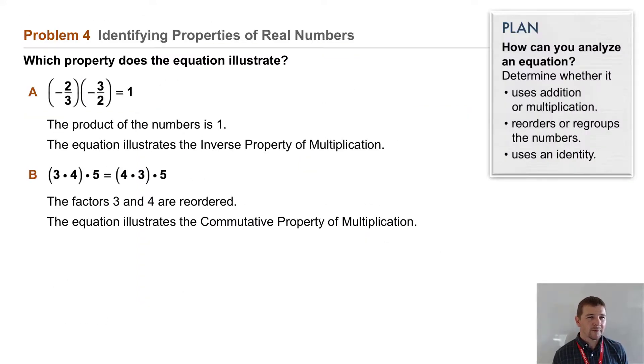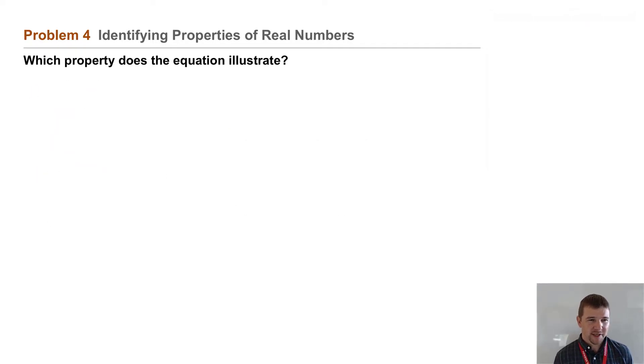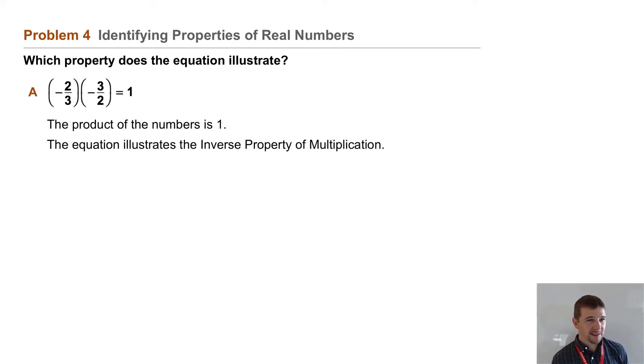Problem number four, identifying properties of real numbers. Which property does the equation illustrate? First, negative two-thirds times negative three-halves equals one. The product of the numbers is one. The equation thus illustrates the inverse property of multiplication.